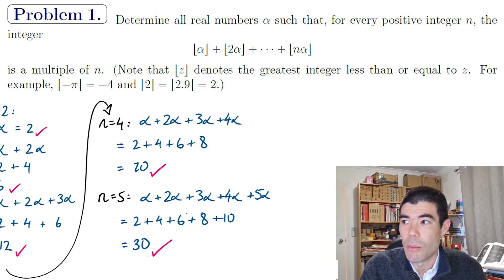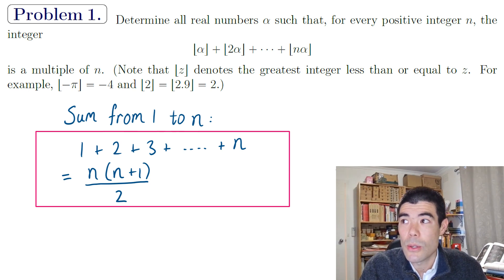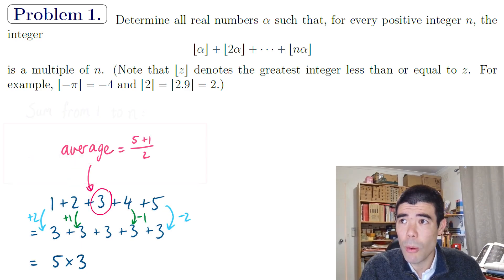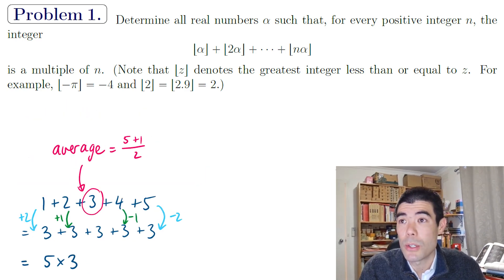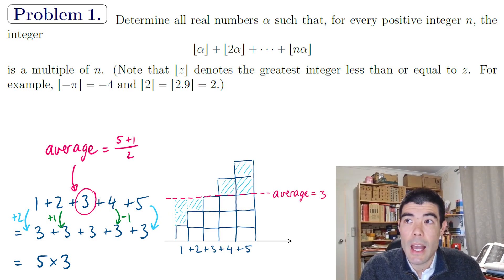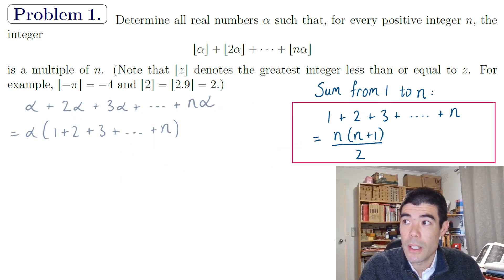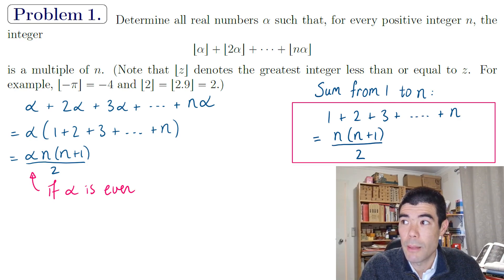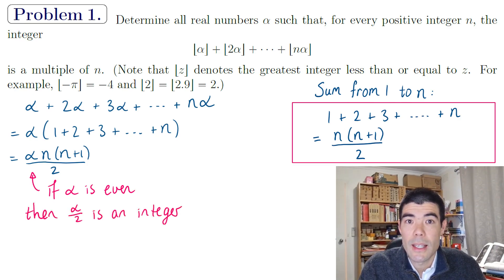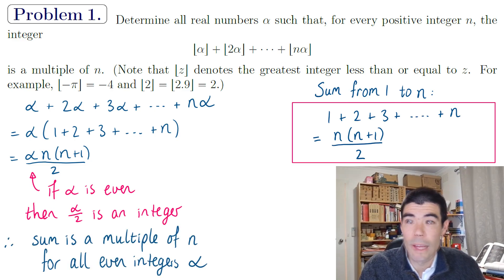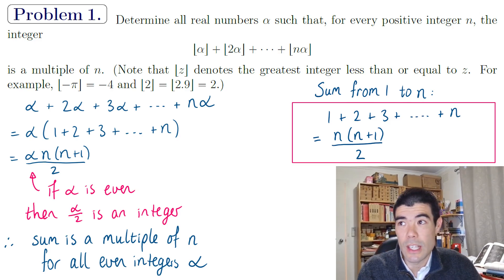We can prove this using the formula: the sum of integers from 1 to n equals n(n+1)/2. The average is always (n+1)/2, and multiplying by n gives n(n+1)/2. So when alpha is an integer, our sum becomes alpha * n(n+1)/2. If alpha is even, then alpha/2 is an integer, so the whole expression is an integer multiple of n. Therefore all even integers are solutions.